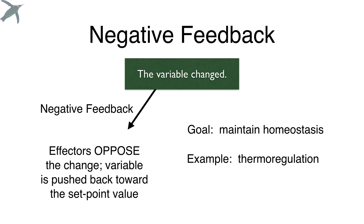In negative feedback, the goal is to maintain homeostasis, because any deviation of the variable is going to be corrected, which keeps things within a narrow range.